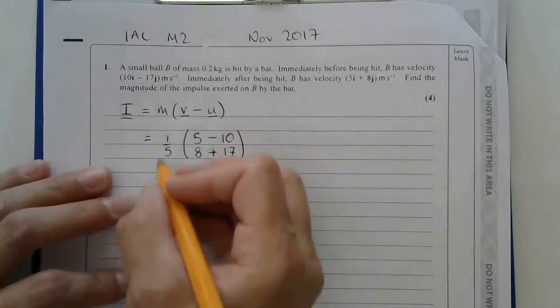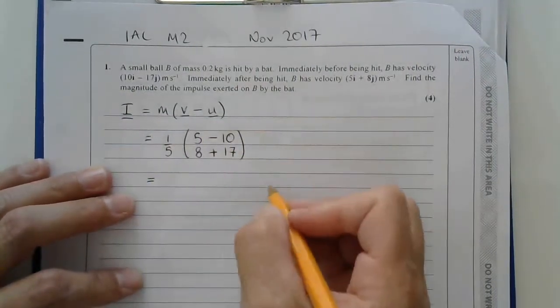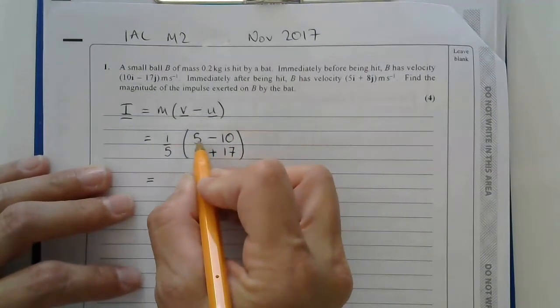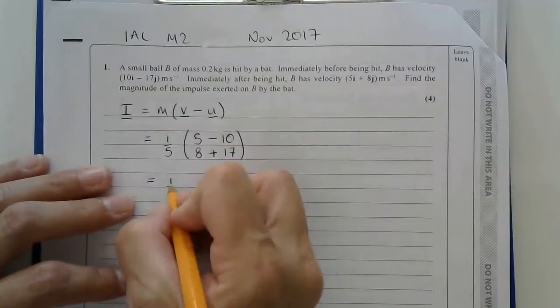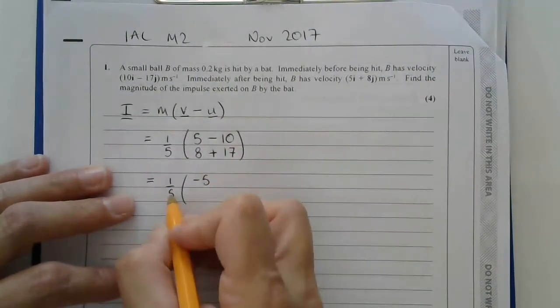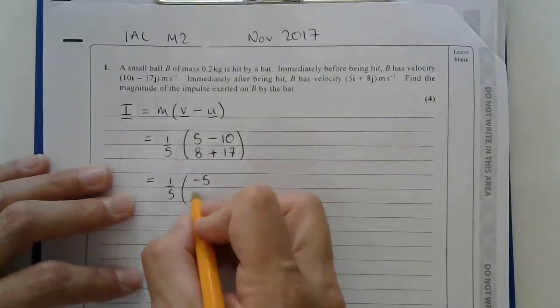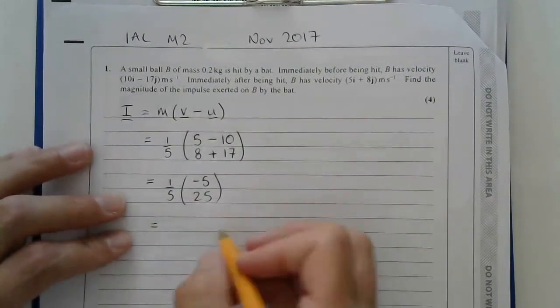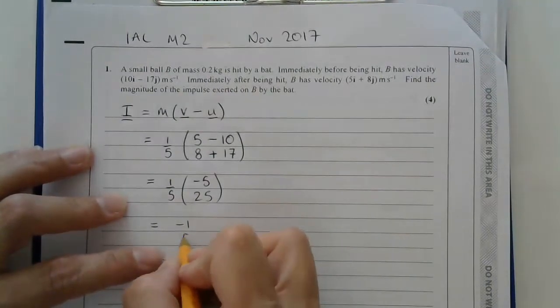And so I've still shown all of my working, but this is a bit neater than putting loads of brackets all over the place. So on the top I'm going to end up with 1 fifth of negative 5, and on the bottom I will end up with 1 fifth of 25. And so I get the answer, negative 1, 5.